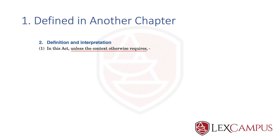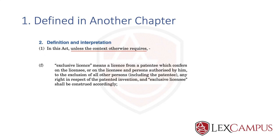For example, 'exclusive license' is defined in section 2(1)(f) as a license from a patentee which confers on the licensee, or on the licensee and persons authorized by him, to the exclusion of all other persons including the patentee. So under 2(1)(f), the patentee and the exclusive licensee are not the same. But the preamble says 'unless context otherwise requires,' so if the context requires them to be the same person, that will be mentioned elsewhere.